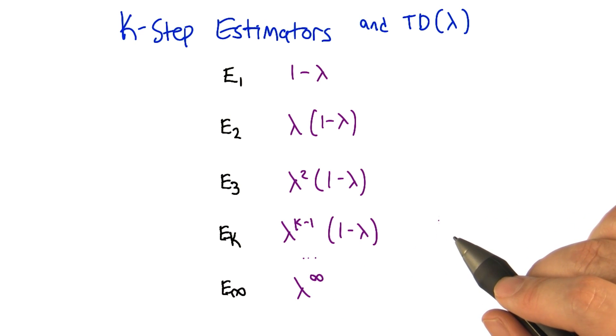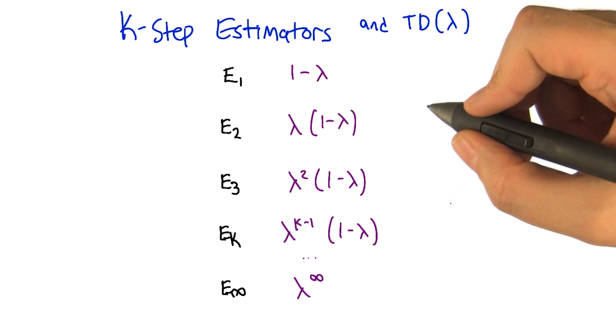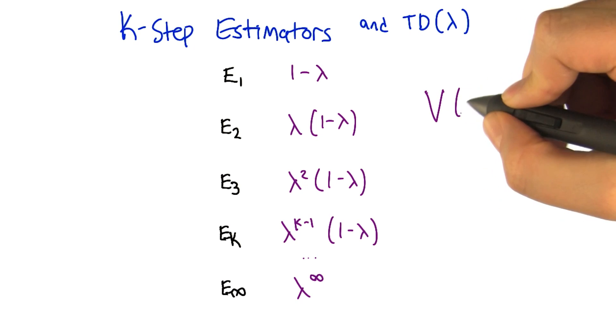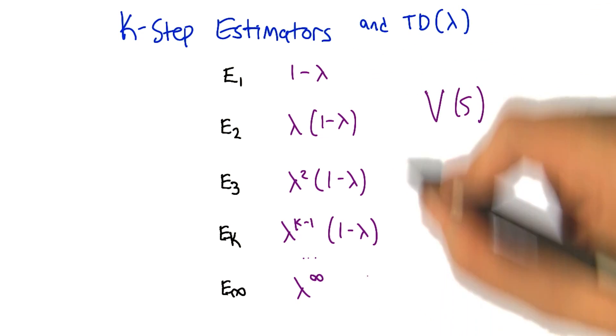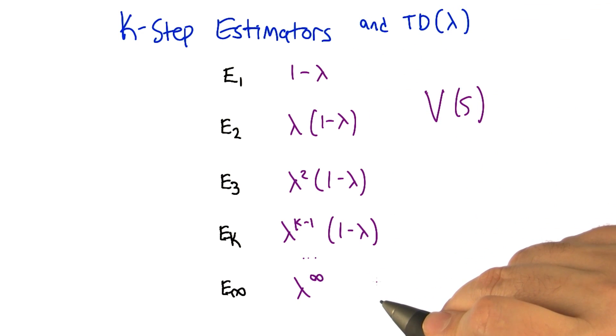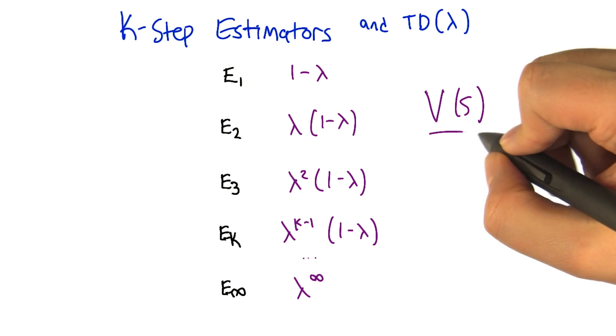So far everything you said makes sense except you haven't told me what you're weighting exactly. What we're going to do is when we change the value of a state, we're going to change it by all the different estimators. All the different estimators are going to give us their own preference as to what we should be moving the value toward, and we're just going to take a convex combination, a weighted combination of all of them each time that we do an update for the value of a state.